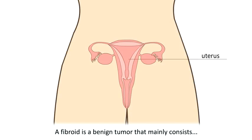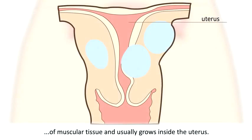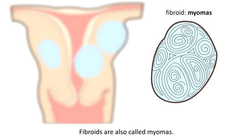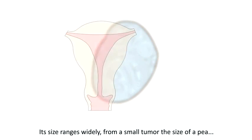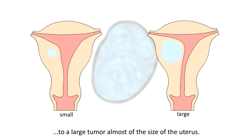A fibroid is a benign tumour that mainly consists of muscular tissue and usually grows inside the uterus. Fibroids are also called myomas. Its size ranges widely from a small tumour the size of a pea to a large tumour almost the size of the uterus.